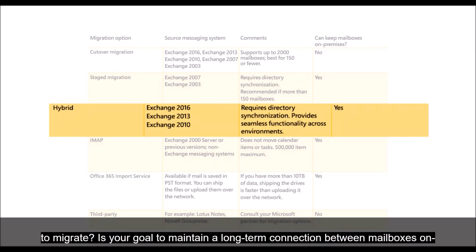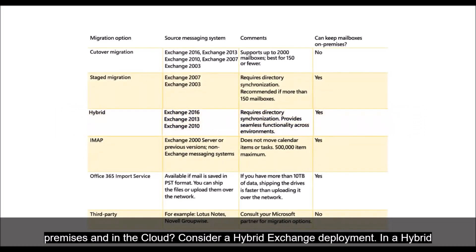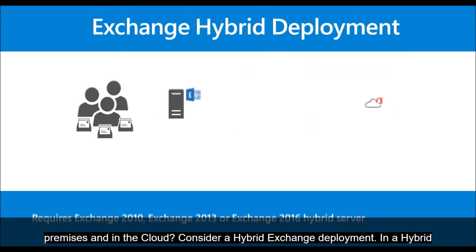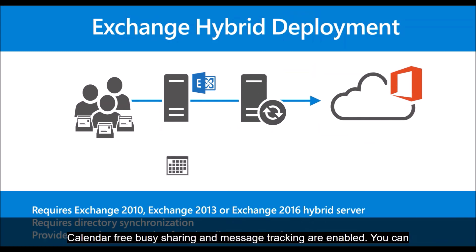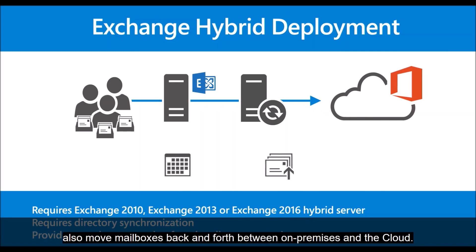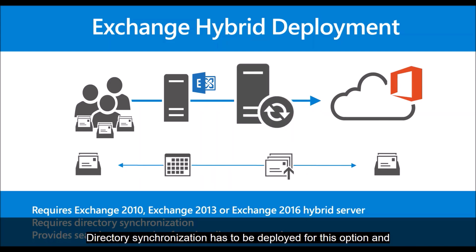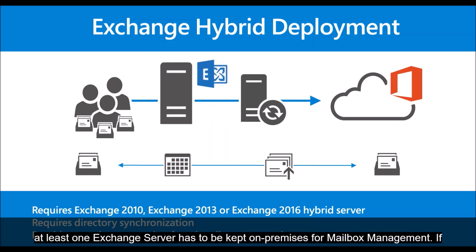Are you running Exchange 2010, Exchange 2013, or Exchange 2016? Do you have more than 150 mailboxes to migrate? Is your goal to maintain a long-term connection between mailboxes on-premises and in the cloud? Consider a hybrid Exchange deployment. In a hybrid deployment, secure messaging functionality is seamless across the environments — calendar free/busy sharing and message tracking are enabled. You can also move mailboxes back and forth between on-premises and the cloud. Directory synchronization has to be deployed for this option, and at least one Exchange Server has to be kept on-premises for mailbox management.